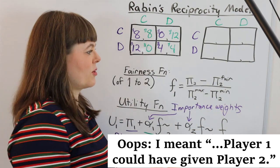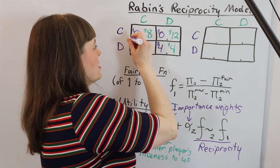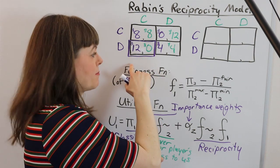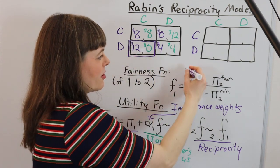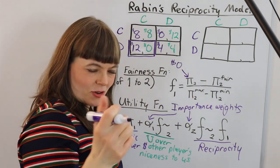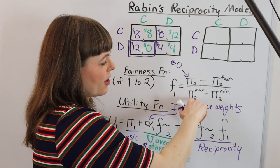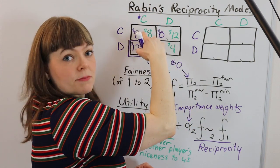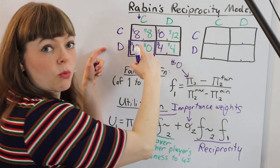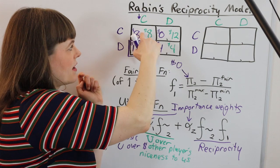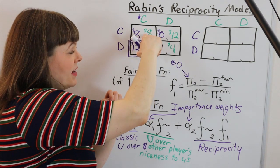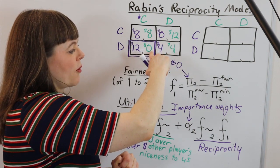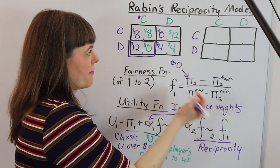So we have the fairness of player one to player two is equal to player two's payoff minus a fair amount to give them over the max that player two could have given them minus the minimum player two could have given them. And so I think it helps with this situation to actually do this with a particular box. So let's choose this box up here. And let's do player one's fairness to player two in this box. So in this box player two gets zero. Now here's the tricky part here. We need the maximum that player one could have given player two. So we know that player two actually chose to cooperate in this box, and so it's really about player one's behavior. And player one could have given player two eight but instead gave player two zero. So the maximum is eight, the minimum is zero.